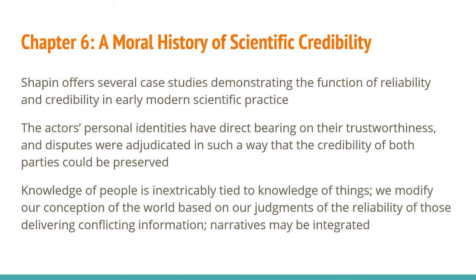In chapter 6, Shapin offers several case studies demonstrating the function of reliability and credibility in early modern scientific practice. This chapter takes on issues of dispute resolution and the integration of conflicting narratives. Shapin argues that our knowledge of the people in our community of practice is inextricably tied to our knowledge of things of the world around us.